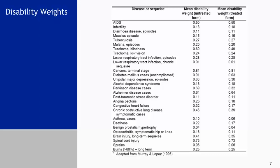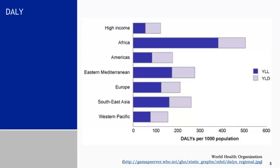Although calculating DALYs is out of the scope of this class, the information depicted in this figure is interesting and interpretable. Looking at the WHO classification of countries by income and geography, we see that in Africa it is the years of life lost due to premature mortality that results in such a high estimate of DALYs per 1,000 population. This is in contrast to high-income countries, the Americas, and the Western Pacific, where both the years of life lost due to premature mortality and the years lived with disability contribute about equally to the overall disease burden. DALYs inform public policy and programs because they are an insightful measure of the burden in the population due to premature mortality and disability.